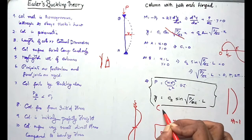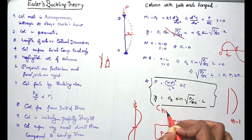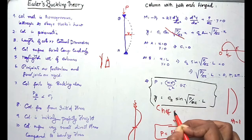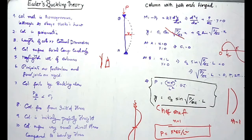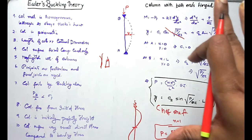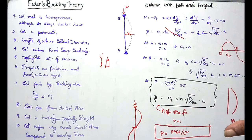This is actually a single bow or a half sine function shape. Based upon this, we are going to calculate further the buckling conditions for columns with different end conditions.